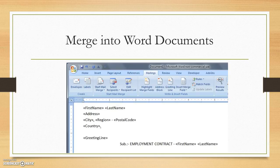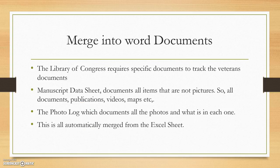This is where the Excel sheet really becomes valuable. After we put all the data into Excel, we merge it into specific Word documents — such as a photo log and a manuscript data sheet. Before we used Excel, we had to type all of this up multiple times. Now it's in Excel and we can just copy it over. The Library of Congress requires specific documents to track the veteran's materials, such as the manuscript data sheet, which must include all documents, publications, videos, maps, etc. The photo log is another form that merges from Excel, containing all photos with their descriptions.